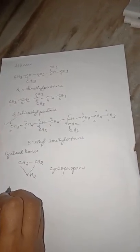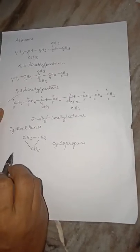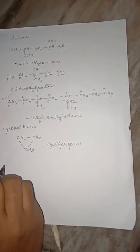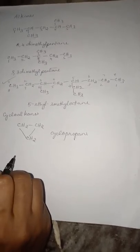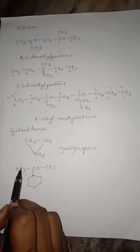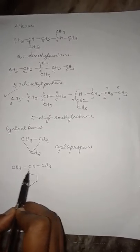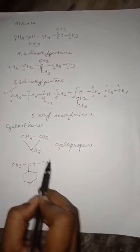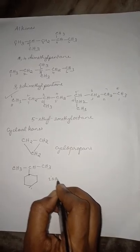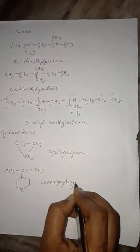Now let us find out how to name a substituted cycloalkane. Substituted cycloalkanes should be named as alkylcycloalkane. The substituents on the ring are named and the positions are indicated by numbers. The ring is numbered so that the substituents are given the lowest possible number. For example, in this cycloalkane the substituent is an isopropyl group, therefore it is isopropylcyclohexane.